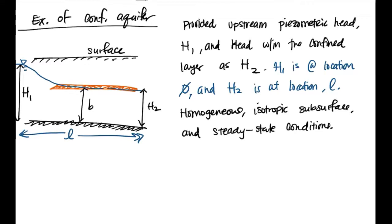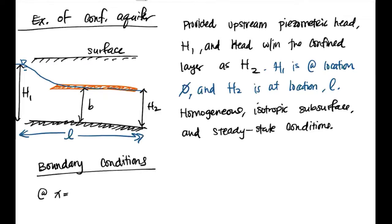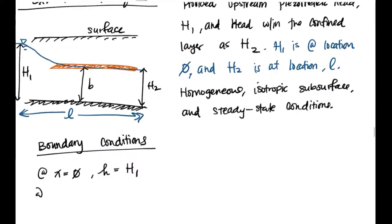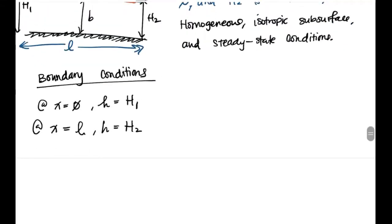All we have to do is state our boundary conditions. At X = 0, our head is equal to H1. And at X = L, our head is equal to H2. These are our boundary conditions, so we start with the confined aquifer equation.